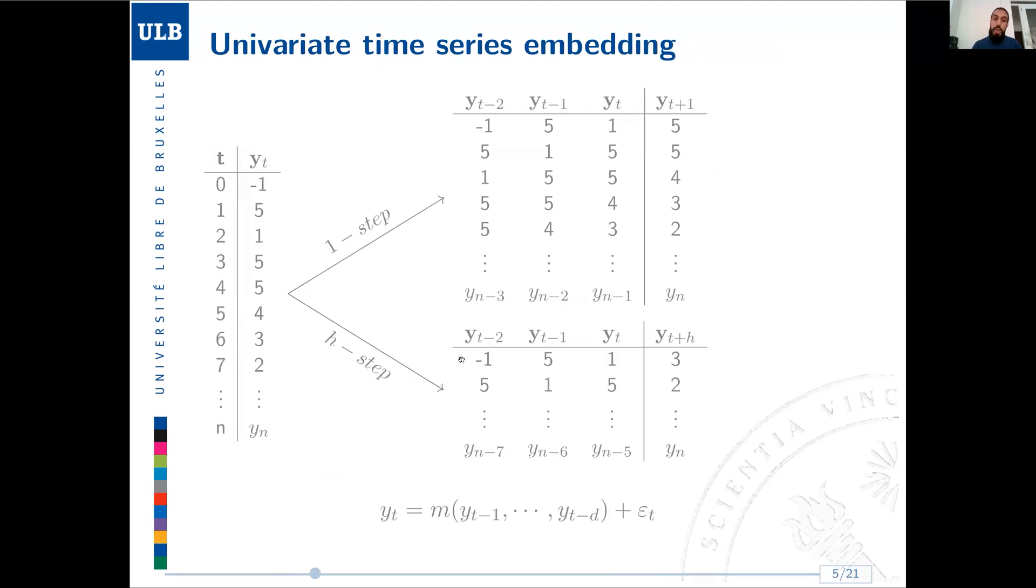If we want to take our initial data and structure it into a format which is most suitable to fit a machine learning model, we need to do this process called embedding. On top, we see the embedding for one step ahead, in which we have y_t, y_t minus 1, y_t minus 2 as the covariates, and we want to forecast the target variable, which is t plus 1. On the other hand, for multi-step ahead, it's the same for the covariates, except we want to forecast at t plus h. These are the ways to restructure the data to do univariate time series forecasting multiple step ahead.